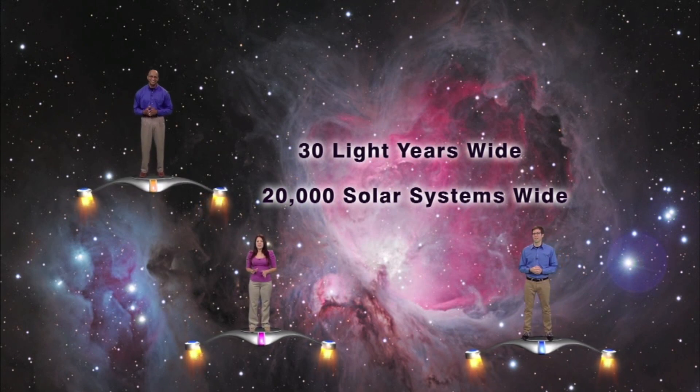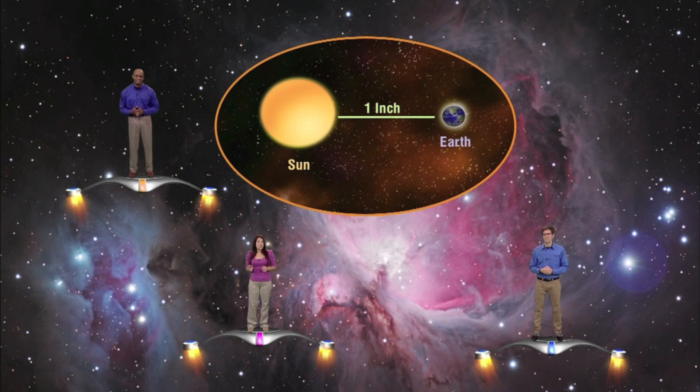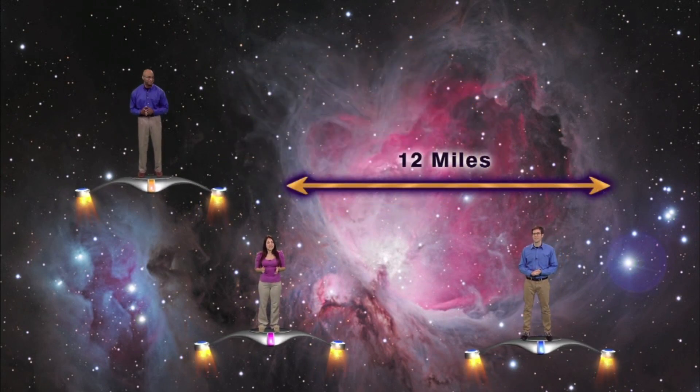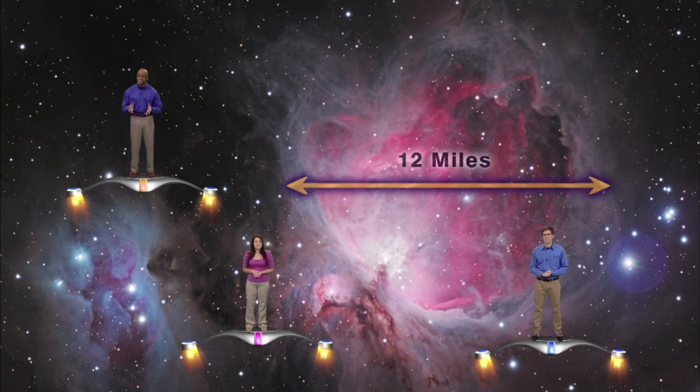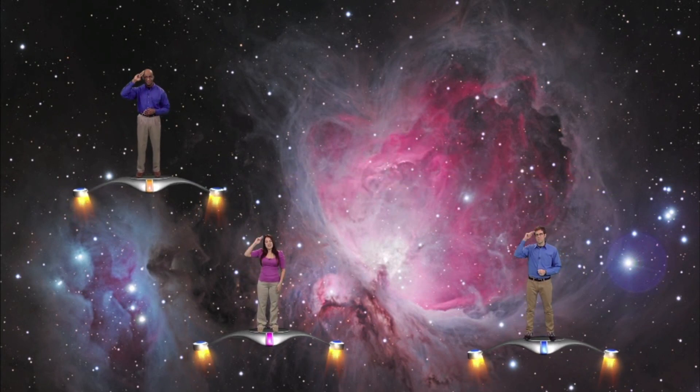Wow! Or to put it yet another way, if the distance from our Earth to the Sun were one inch, the distance across the Orion Nebula would be over 12 miles. Is that mind-boggling or what? So, get outside and enjoy the great Orion Nebula as you Keep Looking Up!